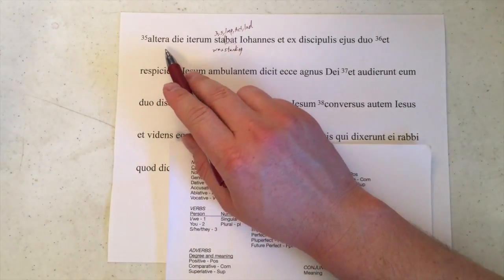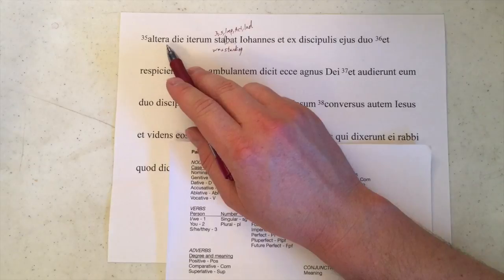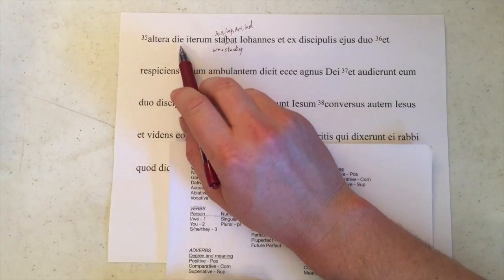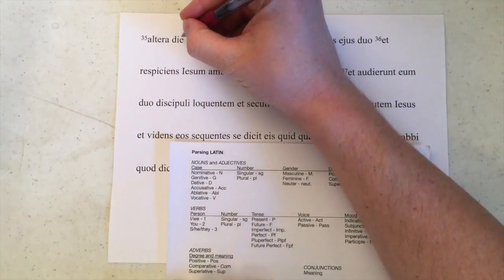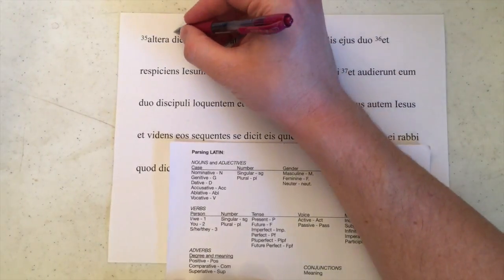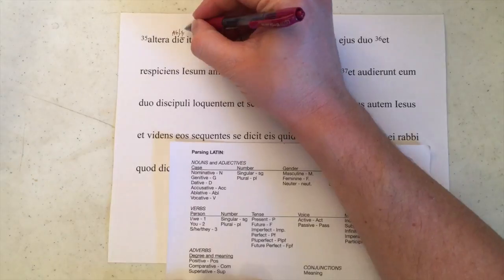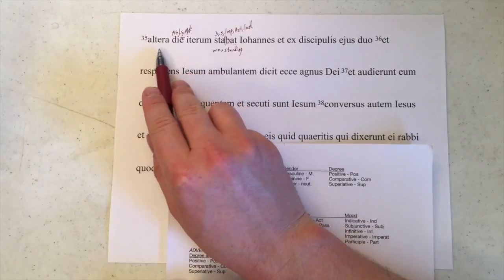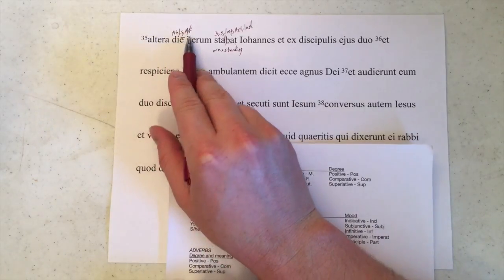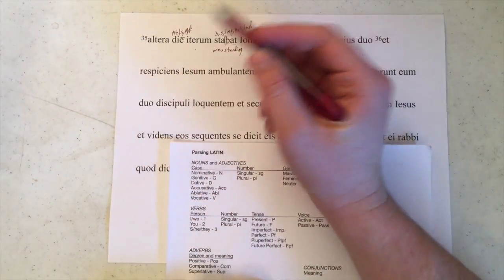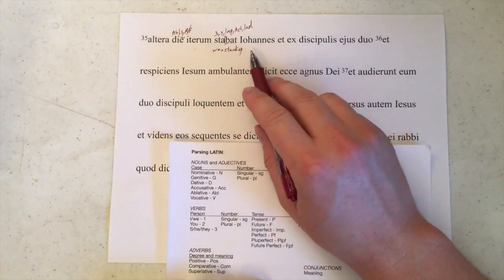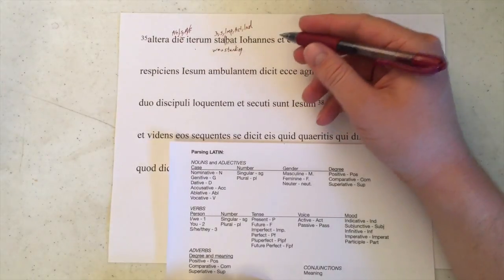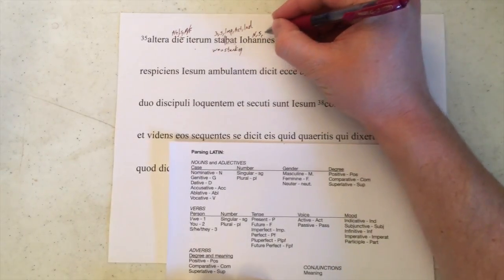Let's double check. Going back to the beginning: altera could be the subject because we've got an A there, but we don't know whether it's long or short — it could be neuter plural. Die, since it's a fifth declension noun, when it ends in just an E, it's going to be long and ablative singular, masculine or feminine. So altera might actually be ablative as well. Iterum is an adverb, so we keep going. Ioannes, we find a name here. It's not a standard Latin word, so it doesn't form normally, and as we've seen it before, this one is clearly going to be our nominative singular subject.